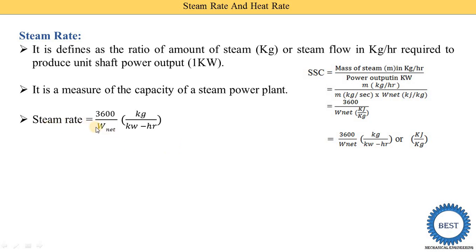The equation of steam rate is similar to the equation of specific steam consumption, which we derived in the last video. The final equation is 3600 divided by W_net.